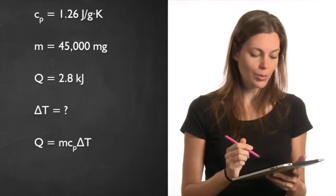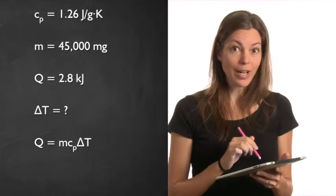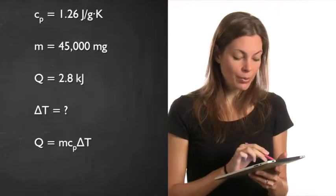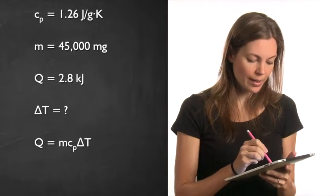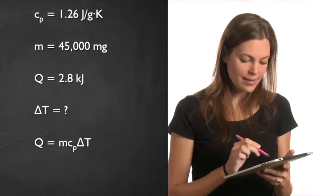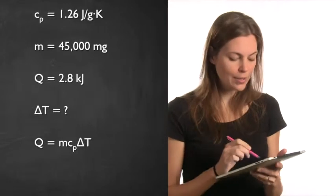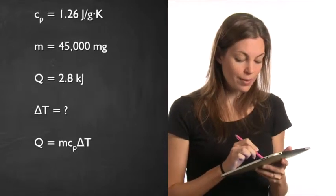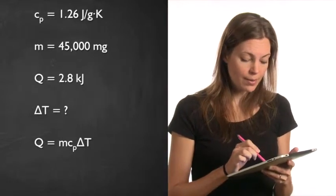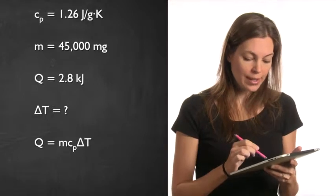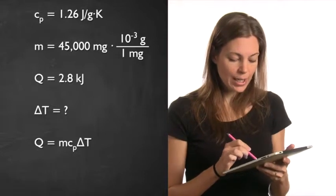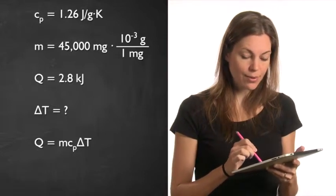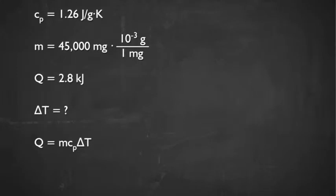The first thing I recommend when solving this problem is to write out everything we know. The specific heat equals 1.26 joules per gram kelvin. The mass is 45,000 milligrams, a very inconvenient unit. We do a dimensional analysis: 1 milligram equals 10 to the negative 3 grams, so this equals 45 grams.